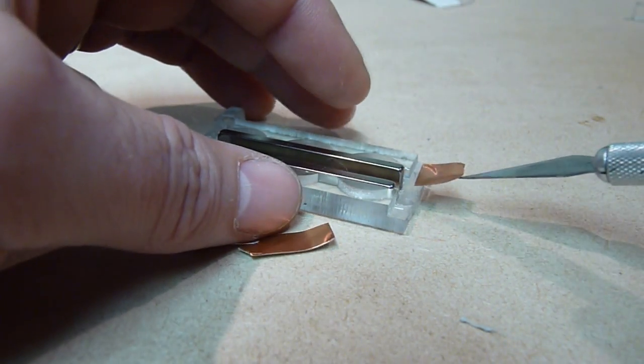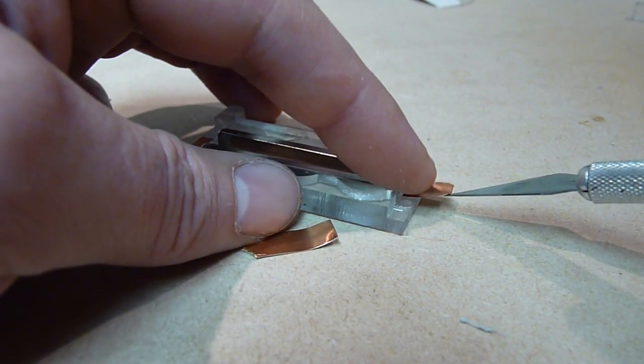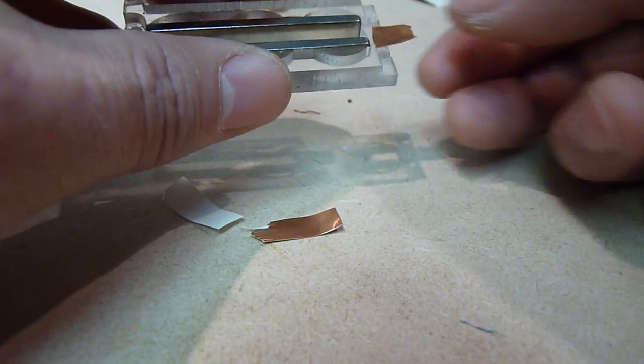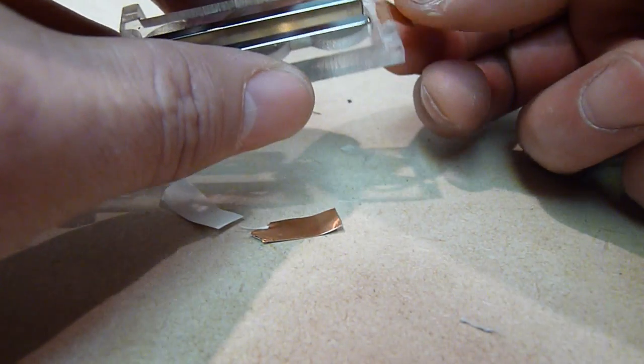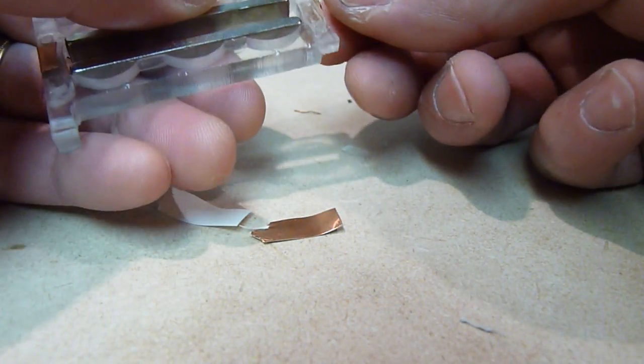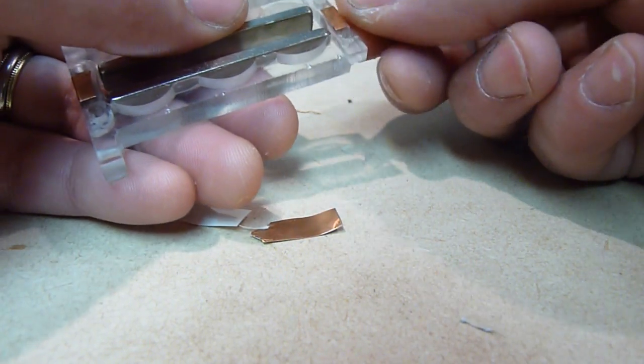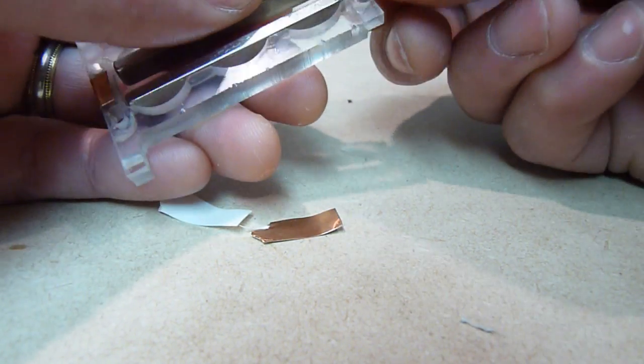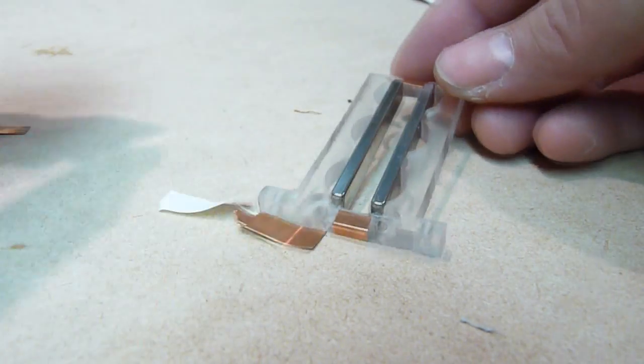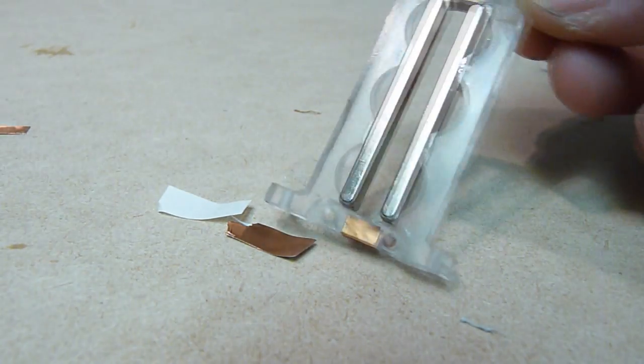So now next step is to install some copper tape. This is sticky on one side, and this is where the ribbon will land on and make an electrical connection. The ribbon will live in between these two magnets.